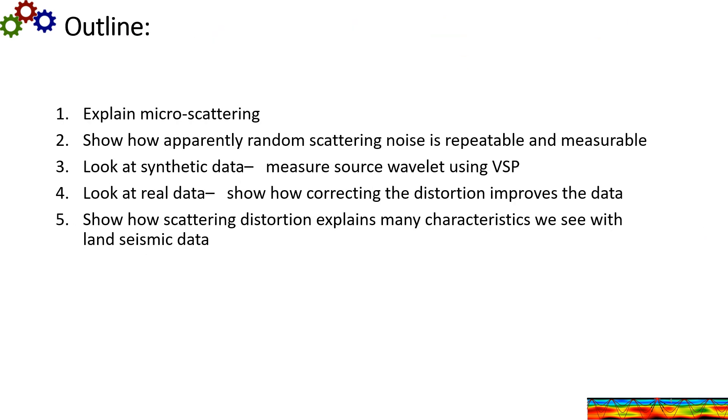My outline is I'm going to explain micro scattering, show how apparently random scattering noise is repeatable and measurable, look at synthetic data and measure the source wavelength using VSP, look at real data and show how correcting the distortion improves the data. And finally show how scattering distortion explains many characteristics that we see with land seismic data.